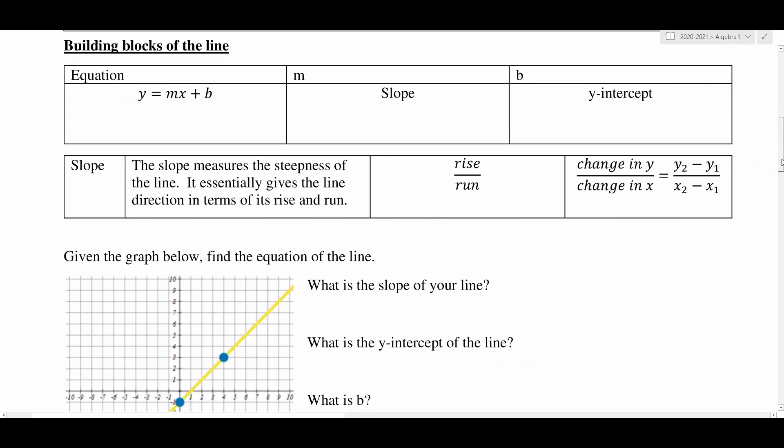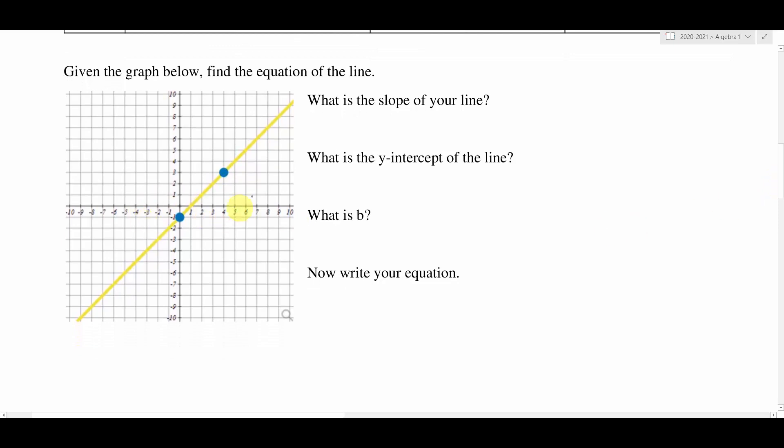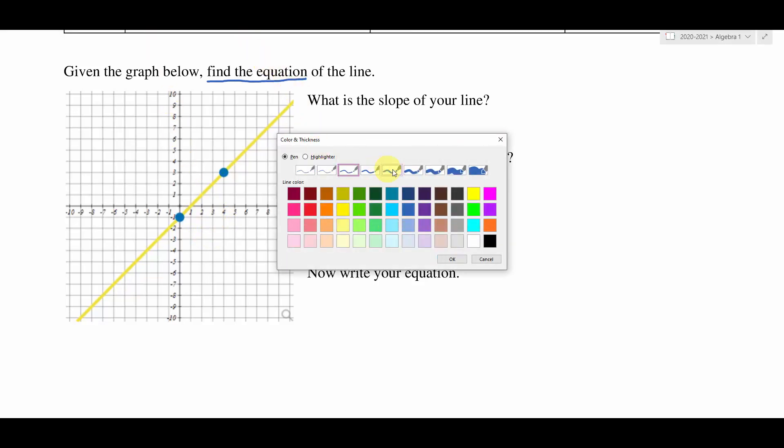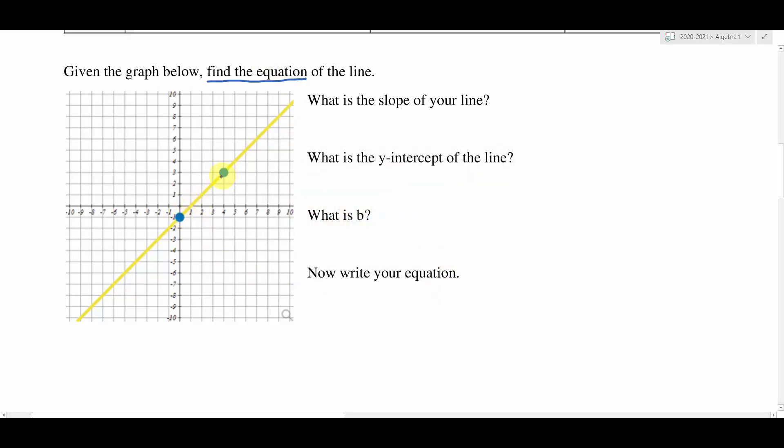Let's take a look at our first example here. This is a pretty typical problem where we're given a graph of a line, and our job is to find the equation of that line. We want to find the equation, and so we're going to start with finding the most important piece of information about a line, which is the slope.